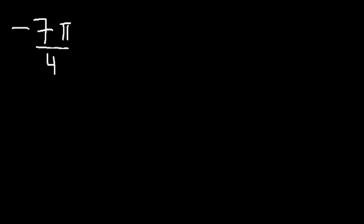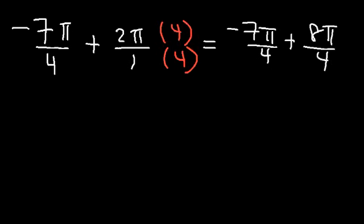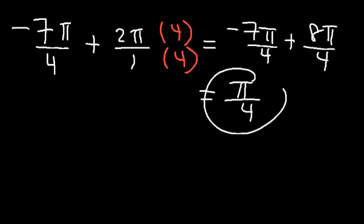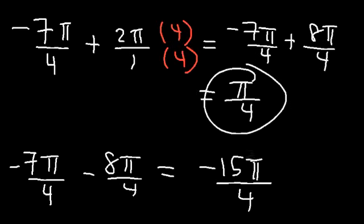Let's try one more example: negative 7 pi over 4. Add 2 pi by multiplying 2 pi by 4 over 4, giving 8 pi over 4. So negative 7 pi over 4 plus 8 pi over 4: negative 7 plus 8 is 1, so the positive coterminal angle is pi over 4. To find the negative coterminal angle, subtract 8 pi over 4: negative 7 minus 8 is negative 15, giving negative 15 pi over 4.